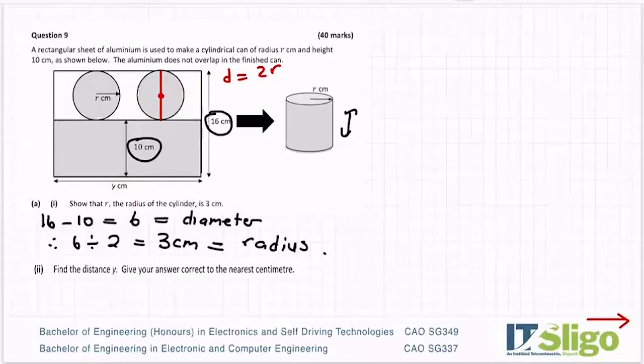Find the distance y. Give your answer correct to the nearest centimeter. So like I was saying, once you open it out, the cylinder, you'll see that the circumference, which is literally just the length of the edge there, becomes this dimension of your rectangle. So y equals circumference of the circle or cylinder.